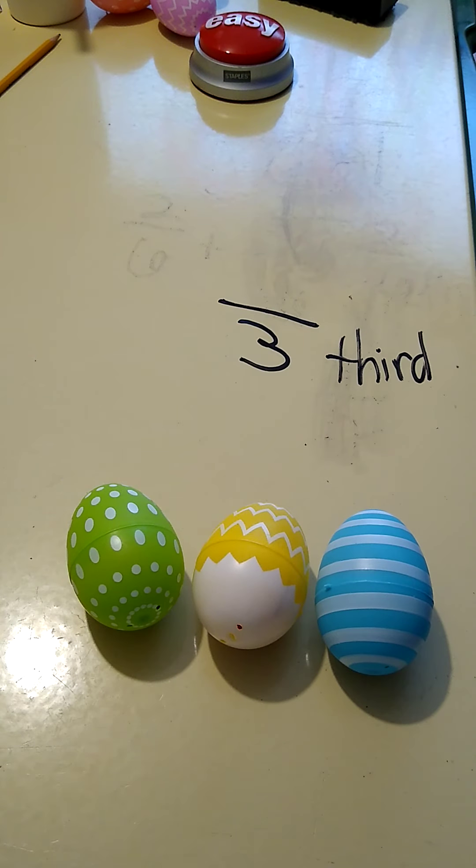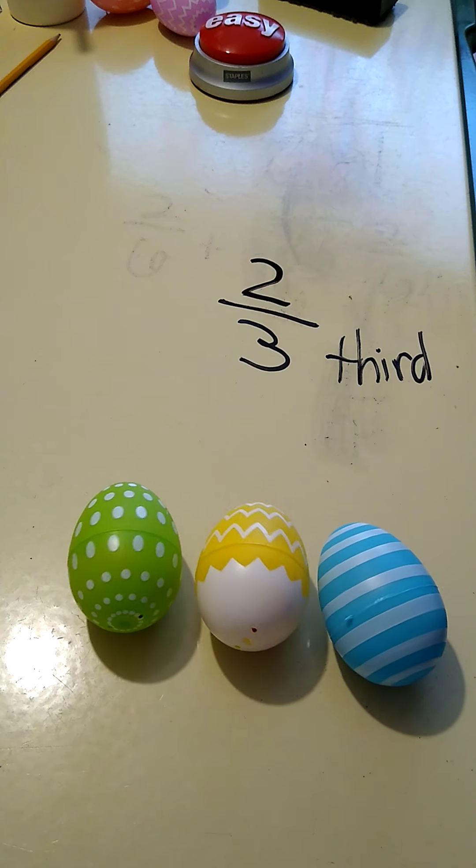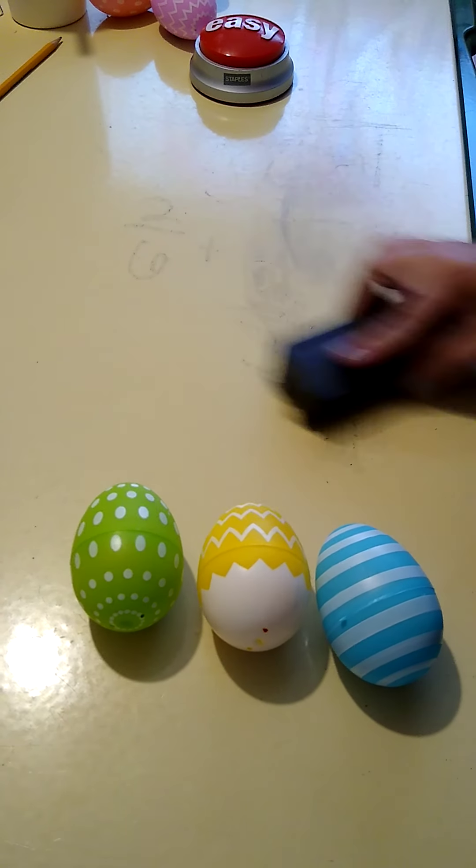So I have one-third blue, one-third yellow, and one-third green. What is my fraction of eggs in this group that is not yellow? That's not yellow and that's not yellow. There were two out of three that were not yellow, so two-thirds is not yellow.